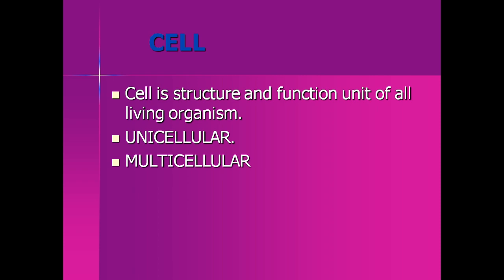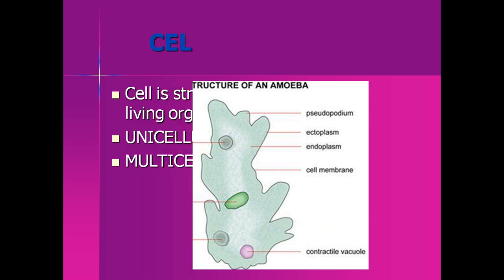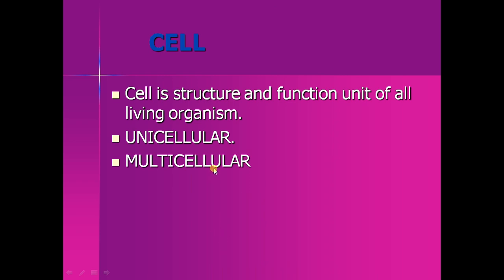On the basis of the number of cells, organisms are divided into two groups: unicellular organisms and multicellular organisms. Unicellular organisms consist of one cell — for example, the amoeba, which is a single-cell organism. Multicellular organisms have millions of cells in their body, like human beings.